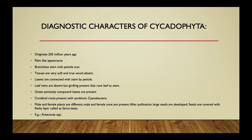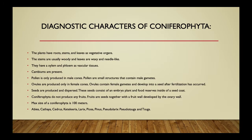Cycadophyta are dioecious plants — male and female plants are separate. Male plants produce male cones and female plants produce female cones, but since male and female are separate, they cannot pollinate each other directly. After pollination, large seeds are developed, and seeds are covered with a fleshy layer called the sarcotesta. An example of Cycadophyta is Cycas.